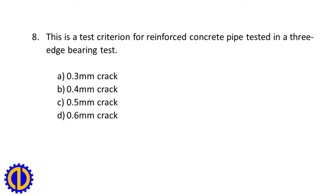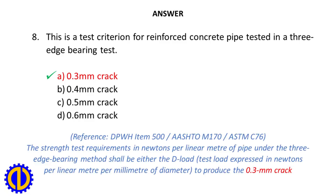Question 8. This is a test criterion for reinforced concrete pipe tested in a three-edge bearing test. A. 0.3 mm crack. B. 0.4 mm crack. C. 0.5 mm crack. D. 0.6 mm crack. Answer: A. 0.3 mm crack.